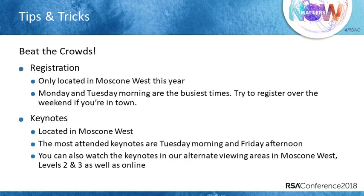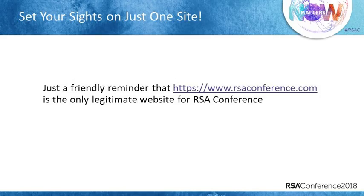Registration is only in West this year. Monday and Tuesday are the busiest times, so if you're in San Francisco over the weekend, you can pick up your badge from 2 o'clock Saturday. From a keynote perspective, the busiest ones tend to be the opening keynotes on Tuesday morning and the closing keynote on Friday afternoon — turn up early for those. You can also watch keynotes in alternate viewing areas in Moscone West on Levels 2 and 3, as well as online. A friendly reminder: rsaconference.com is the only legitimate official website for RSA Conference.